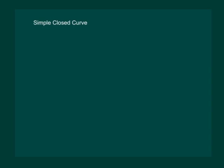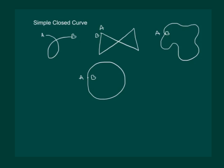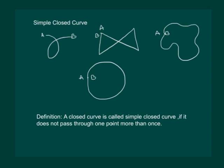To understand simple closed curve, let us draw some closed curves. Clearly all these figures are closed curves. Now we define simple closed curve as a closed curve is called simple closed curve if it does not pass through one point more than once.